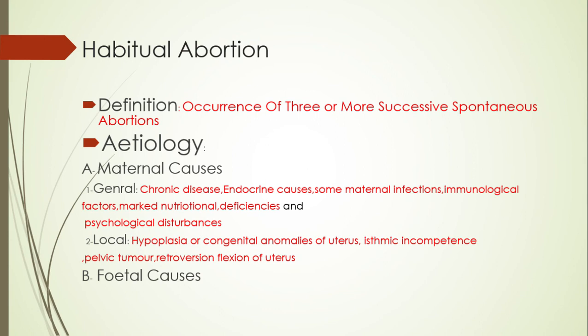An important cause of habitual abortion is isthmic incompetence. Isthmic incompetence means incompetence of the internal os of the cervix. The causes of isthmic incompetence are usually not congenital but result from trauma to the internal os — such as bad management of normal labor, manual dilatation of the cervix, forceps or breech extraction before full cervical dilatation, laceration of the internal os during rapid or vigorous dilatation in dilatation and curettage operations.